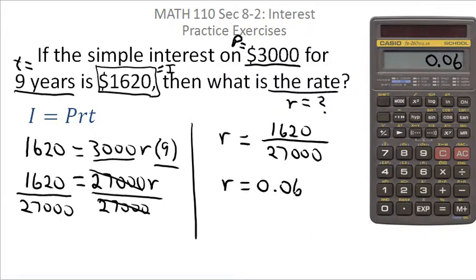Except that we want to write that as a percent. And as you remember, to change a decimal to a percent, you move the decimal point two places to the right. So the interest rate would be 6%.